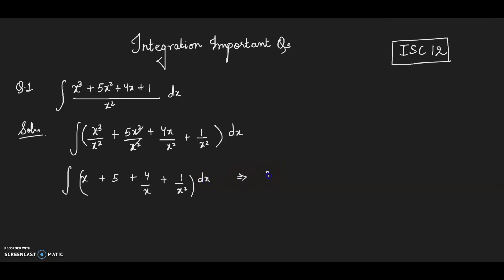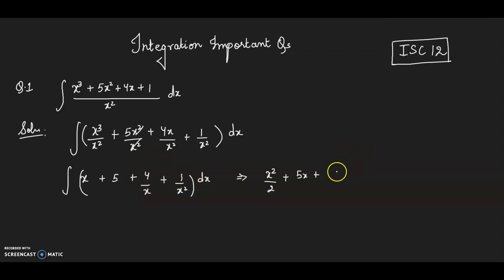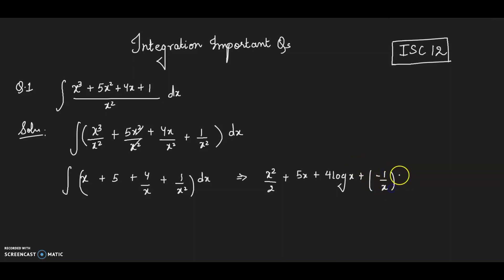x² and x² cancel, leaving x plus 5 plus 4 divided by x plus 1 by x² dx. So when you integrate them you will get x²/2 plus 5x, then 4 into 1/x — 4 is a constant outside the integration sign — so log x, plus integration of 1/x² dx, which gives minus 1/x plus C, the constant of integration.